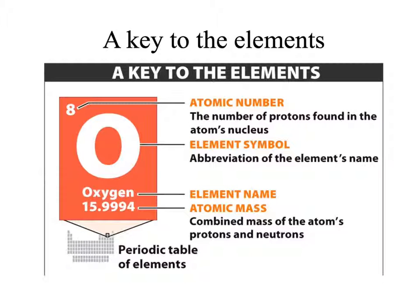The periodic table is a key to our elements. Each space in the periodic table has a lot of information about each type of element. For example, the atomic number shows the number of protons found in the atom's nucleus. This is located in the top corner of most periodic tables. Because most atoms are neutral, there are an equal number of protons and electrons. Therefore, the atomic number actually tells us the number of protons and electrons.